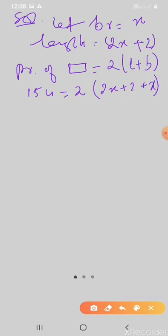154 divided by two. We can divide both sides. It becomes 77 is equal to two x plus x plus two, which simplifies to three x plus two.